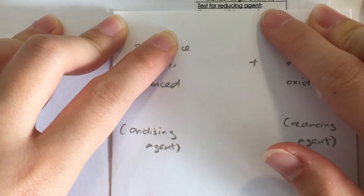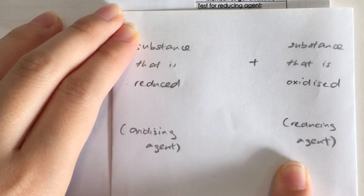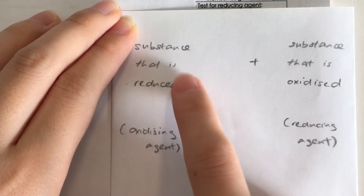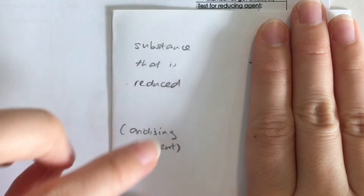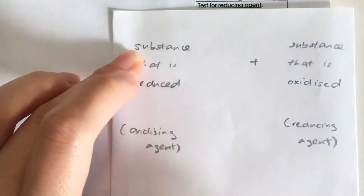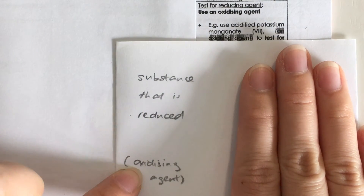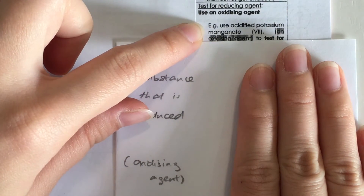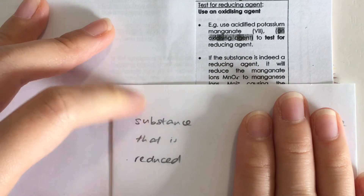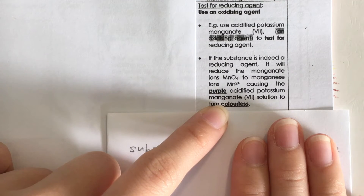So what if I want to test for a reducing agent? If a reducing agent is present, it would be reducing something else. So I would add an oxidizing agent to see if it gets reduced — if it gets reduced, then the reducing agent is present. Here I am adding potassium permanganate as my oxidizing agent to see if it gets reduced.